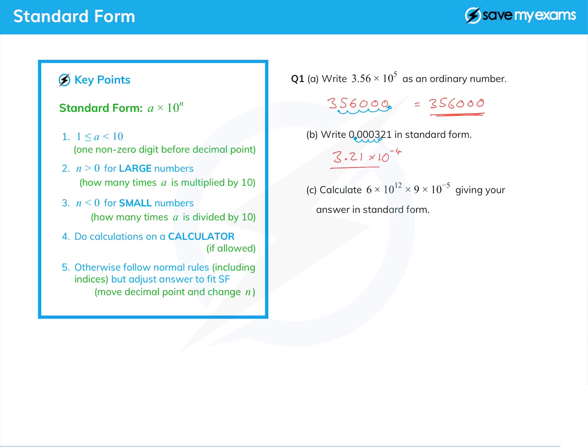Now I'm asked here to multiply two numbers in standard form together. I've got 6 times 10 to the 12 times 9 times 10 to the minus 5. So a very big number by quite a small number. Well, I've said follow the usual rules. What do I mean?